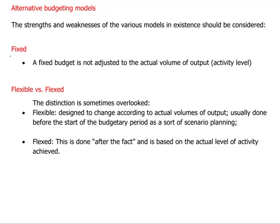A fixed budget is really the most common and traditional budget — we can see this as being a kind of starting point. The notion is that you set a budget at the beginning of the year and then you operate that budget through the entire budgetary period, based on assumptions that are taken originally and are not adjusted subsequently.